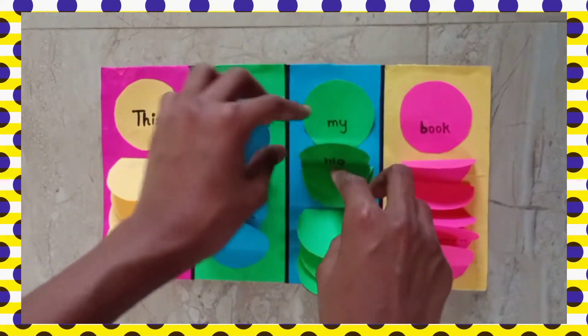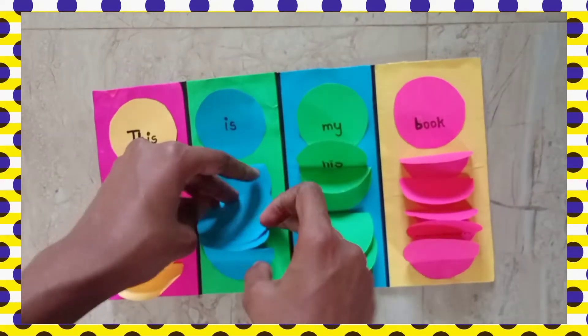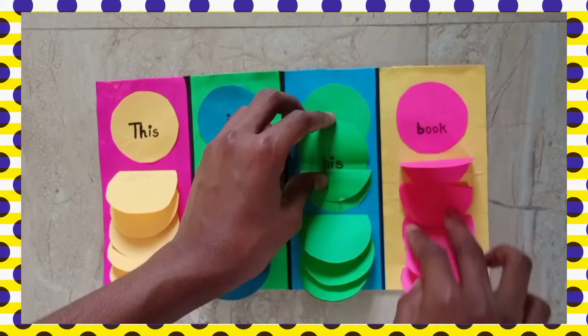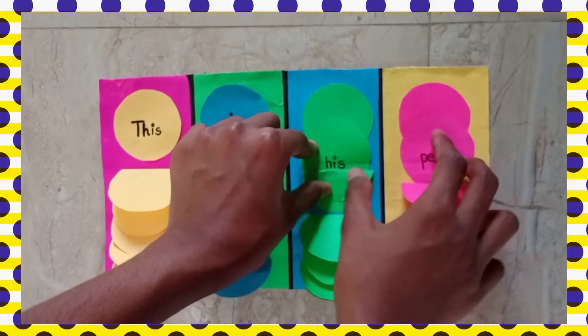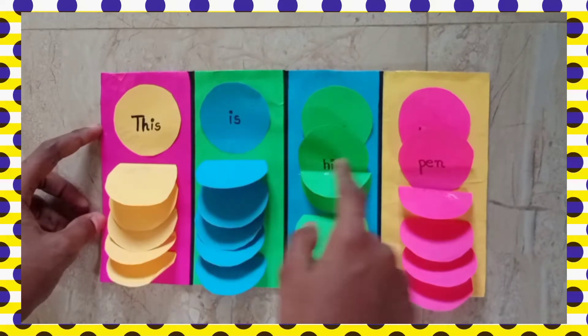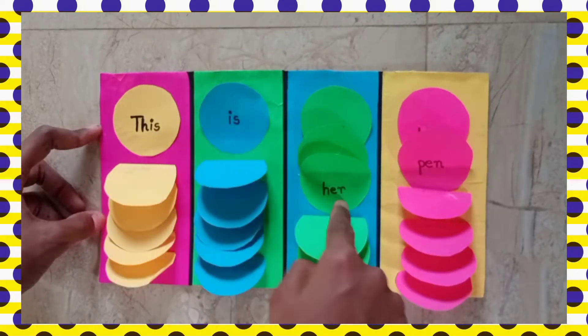Blue colors, we have read all the words, and the pink color, we have read all the words. Now let us read green words. Let us change the green words: This is his pen. This is her pen.